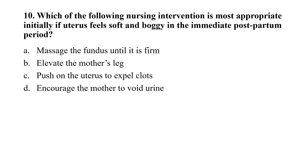Question number 10: Which of the following nursing interventions is most appropriate initially if the uterus feels soft and boggy in the immediate postpartum period? Option A: massage the fundus until it is firm; option B: elevate the mother's legs; option C: push on the uterus to expel clots; option D: encourage mother to void urine. The correct option is A, that is massage the fundus until it is firm.